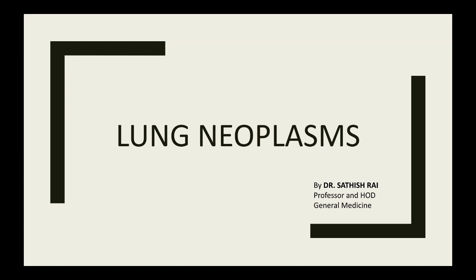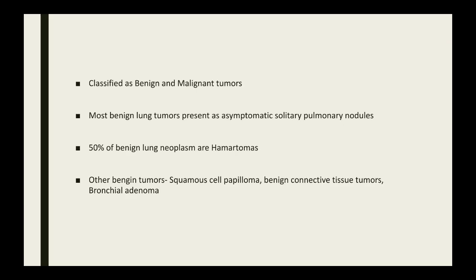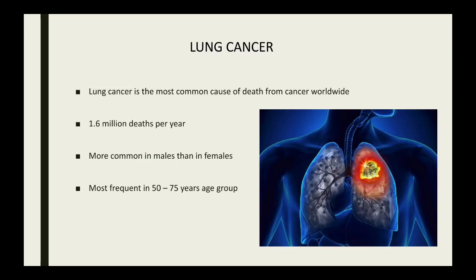Hello everyone. I will be talking about lung neoplasms today. Lung tumors are broadly classified as benign and malignant tumors. Most benign tumors are asymptomatic and they usually present as solitary pulmonary nodules. Of the benign tumors, hamartomas are the commonest. Other benign tumors include squamous cell papilloma, benign connective tissue tumors, and bronchial adenoma.